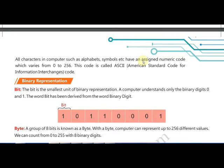The full form of ASCII is American Standard Code for Information Interchange. Nowadays, instead of ASCII, Unicode is used everywhere because Unicode supports multiple languages — not only English but other regional languages as well. ASCII has been upgraded to a new version called Unicode, which is a universal code representing English and other regional languages like Marathi.